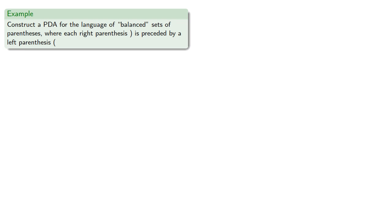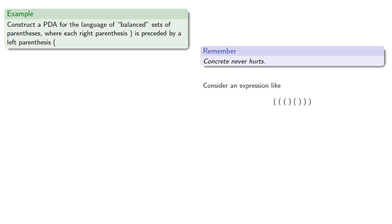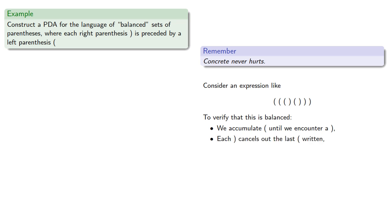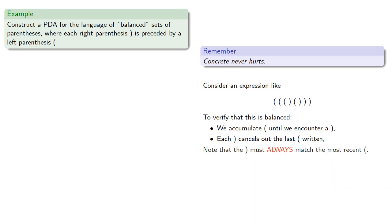For example, let's construct a pushdown automaton for the language of balanced sets of parentheses, where each right parenthesis is preceded by a left parenthesis. Remember, concrete never hurts. Let's consider an expression that should be accepted. To verify it is balanced, we would accumulate the open parentheses until we encounter a closed parenthesis, and each closed parenthesis cancels out the last open parenthesis written. The closed parenthesis must always match the most recent open parenthesis.